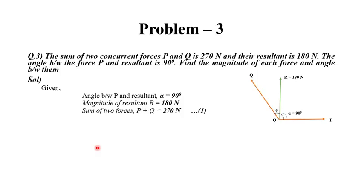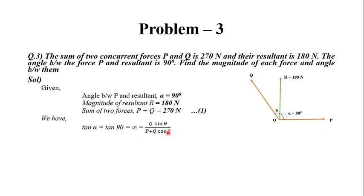Using the parallelogram law, the alpha relationship is: tan α = Q sinθ / (P + Q cosθ). Since tan α = tan 90° = infinity, the denominator must equal zero. That gives us P + Q cosθ = 0, and therefore Q cosθ = −P. Let this be equation number 2.